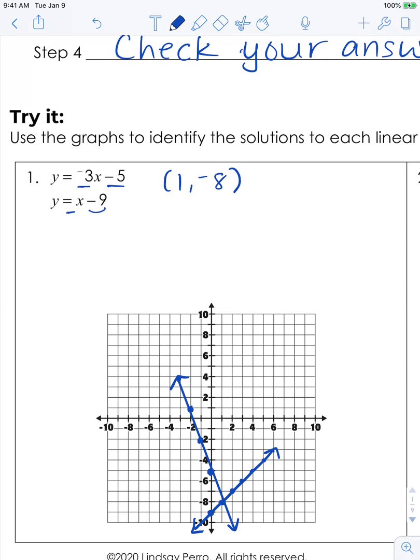And then everybody's favorite step, of course, is to check. Negative 8 is equal to negative 3 times 1 minus 5. Negative 8 is equal to negative 3 minus 5. Negative 8 is equal to negative 8, so that checks out. Second equation, negative 8 is equal to 1 minus 9. Negative 8 is equal to negative 8, so we know that's correct.